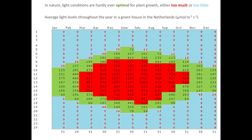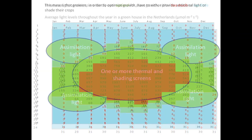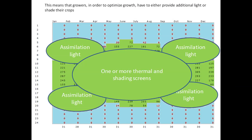Here you see a graph with the average light intensities in a greenhouse in the Netherlands throughout the year. In red are the hours during the day where light intensities are too high for optimal photosynthesis, while blue indicates hours when light is too low. From this it becomes immediately apparent that light conditions are hardly ever optimal — either light intensities are too low or they are too high. This means that growers will want to use supplemental lighting during parts of the day while having to use shading screens during others.